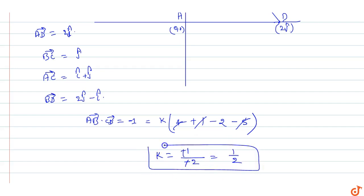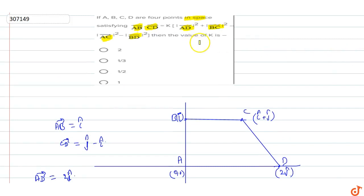5 cancels out, so k equals minus 1 upon minus 2. The negatives cancel out, so the value of k is equal to 1 by 2. Option C is the correct option. This is the answer for this question.